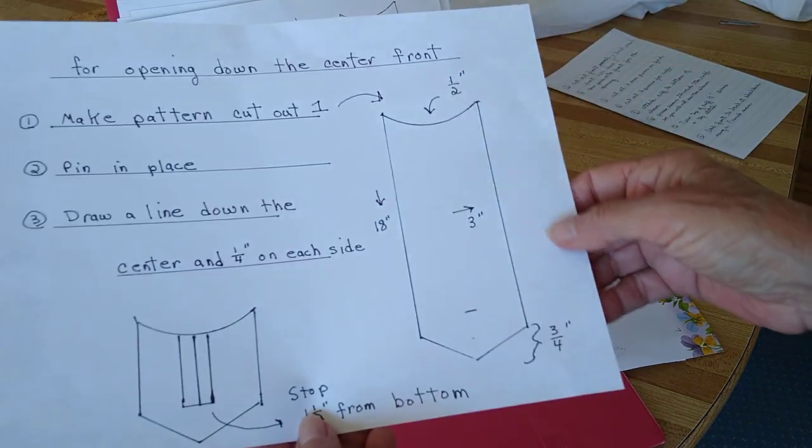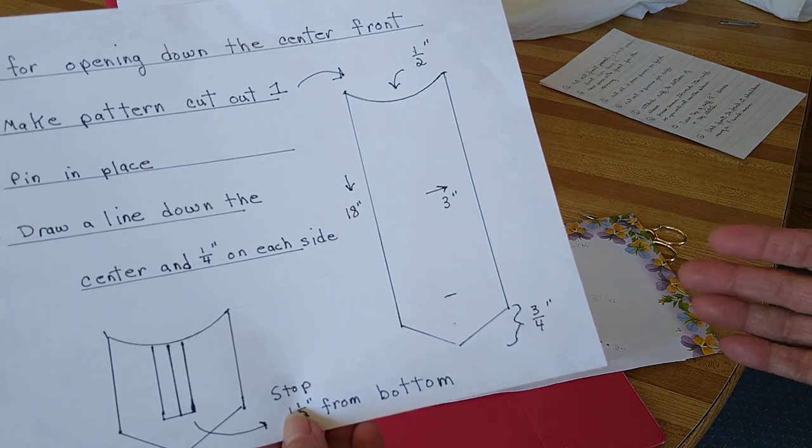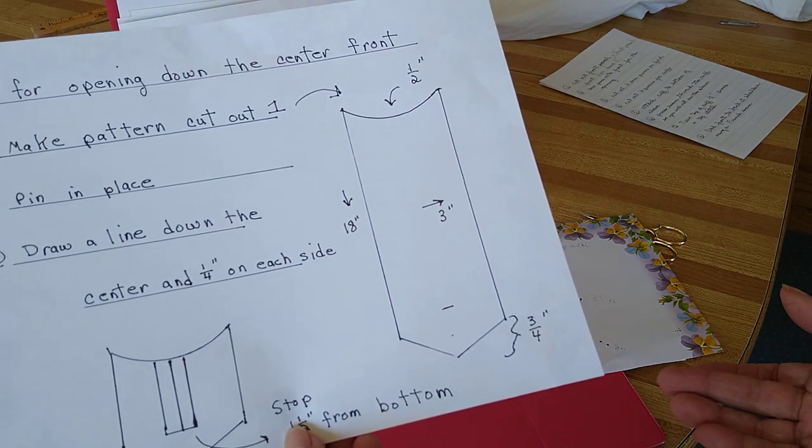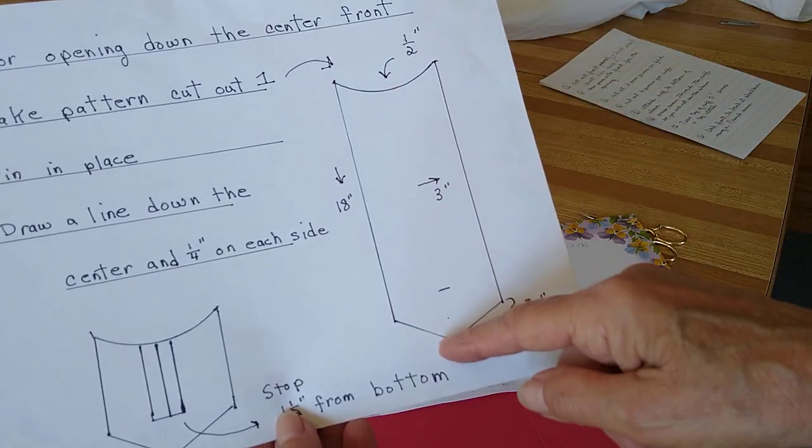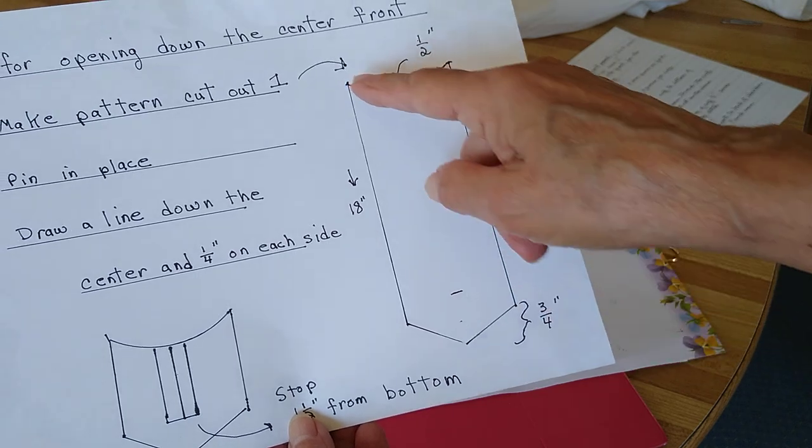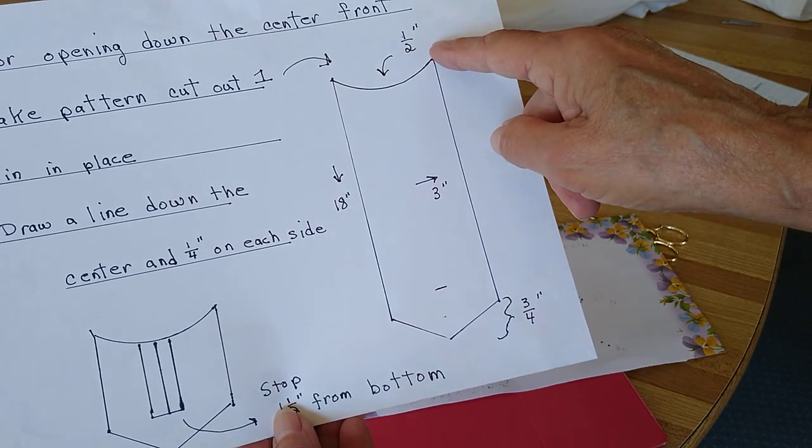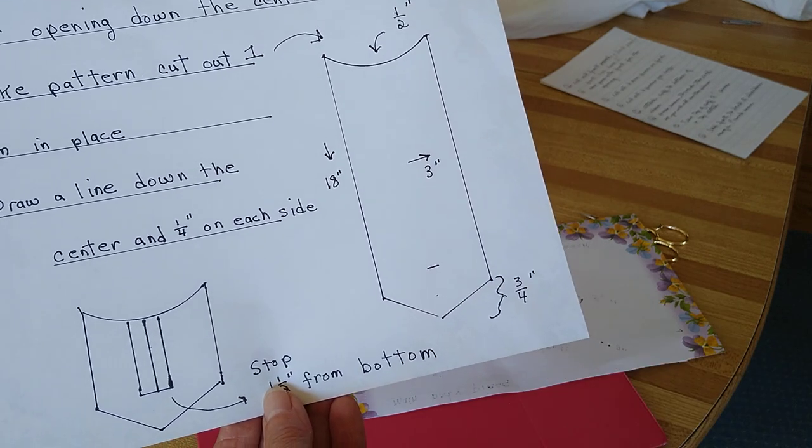The next piece will be the insert so you can get it on. The insert's total length is 18 inches. The width is 3 inches. There's a half inch dip for the neckline and three quarters of an inch for the V at the bottom.